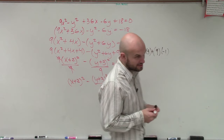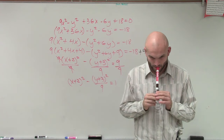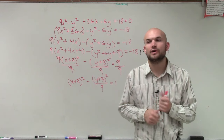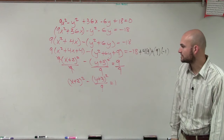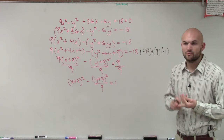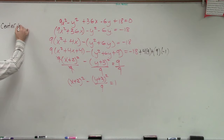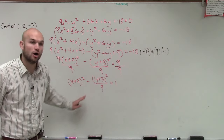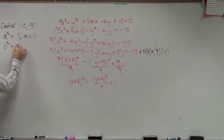So now they're asking us to find the center. The center is going to be at negative 2, negative 3. Remember, it's always a squared minus b squared for a hyperbola. So we can say a squared equals 1, therefore a equals 1; b squared equals 9, therefore b equals 3.